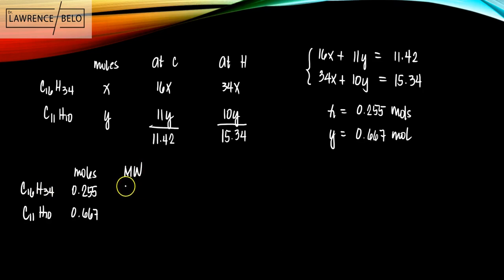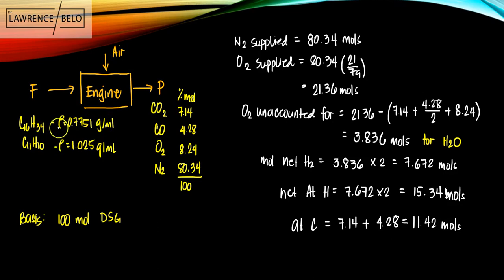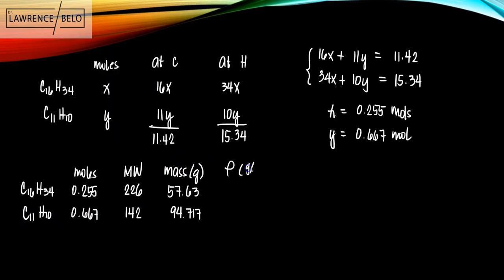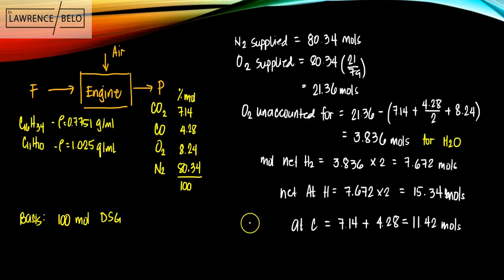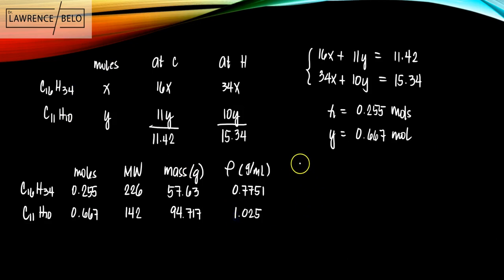So you know the moles, you know the molecular weight. We can solve for the mass in grams. So the mass, let's just multiply the two. You'll be able to get 57.63 grams. And then the one at the bottom is 94.717. Take note earlier that we were given densities. So given the density in gram per ml, this is given as 0.7751 and 1.025. We can solve now for the volume.